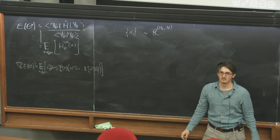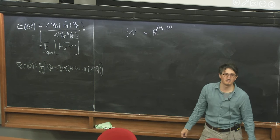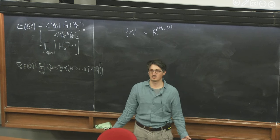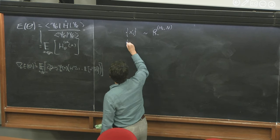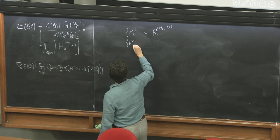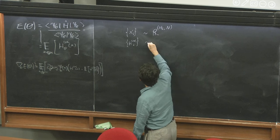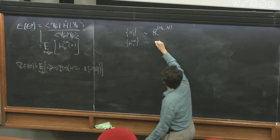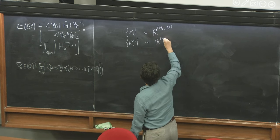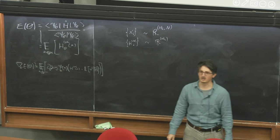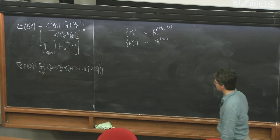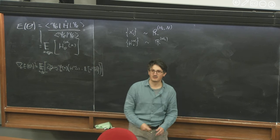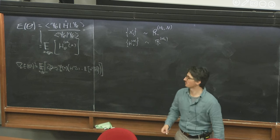Do you agree? Then I can compute H_loc — the local estimator. For every one of those samples, it's a scalar. So this would be a vector of size: number of samples. And then I just take the average — np.mean — and I'm happy.